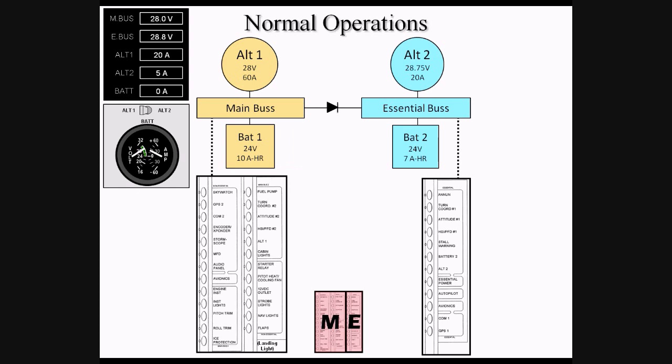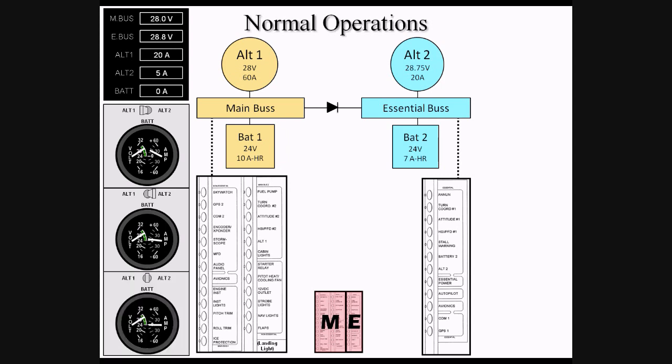With the switch in the Alt-2 position, the gauge will display Alternator-2 output, and with the switch in the BAT position, the gauge will display charge flowing to or discharge from BAT-1 and BAT-1 only.